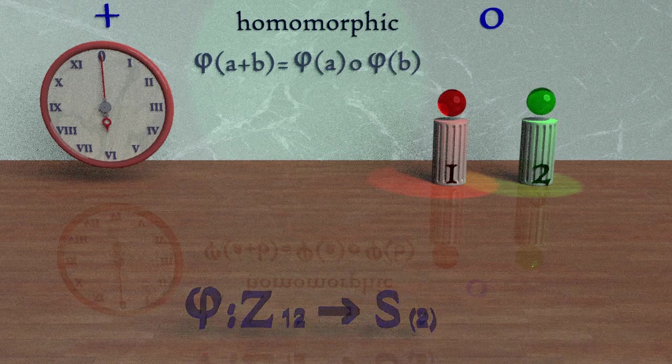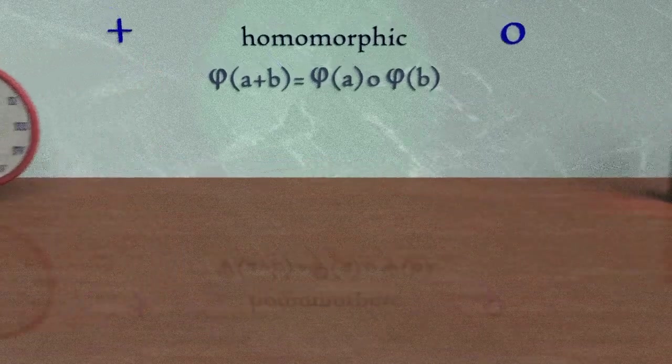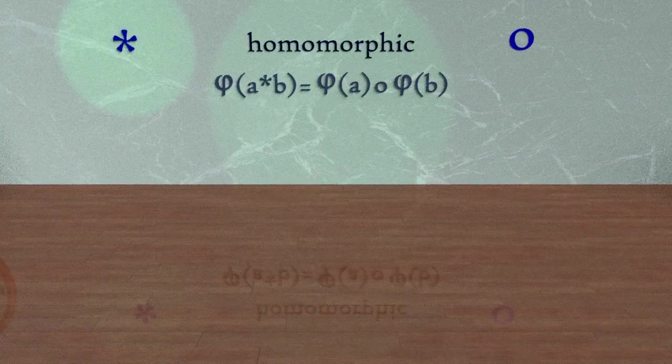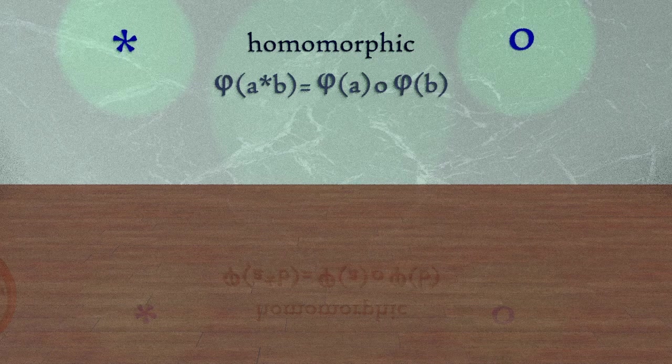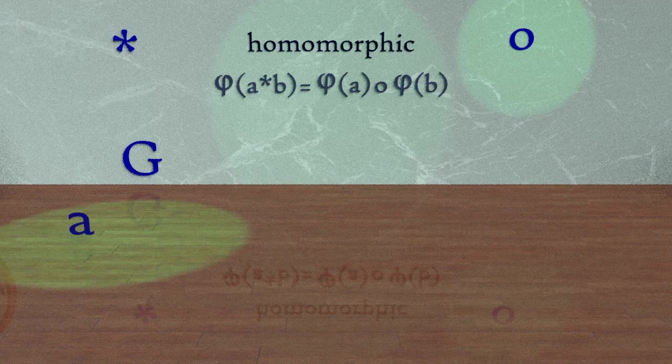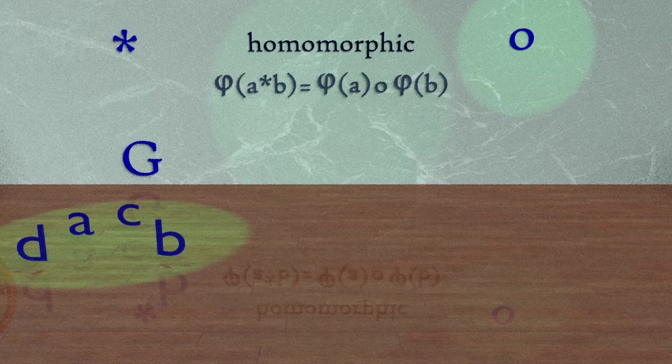Now let's look at this without specific groups just to solidify our understanding. On the left, we will have a generic operation which we will call star. On the right, we will call it circle. We will have the set of G on the left with the generic elements A, B, C, D, E, F, and so on.